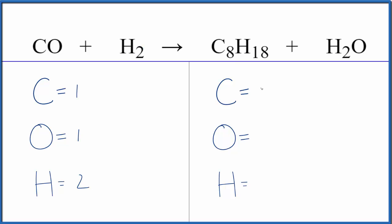On the product side, I have eight carbons, one oxygen here, and 18 hydrogens. And if you forgot these two hydrogens here, that's probably why you're having problems with this particular equation. So we have a total of 20 hydrogens on the product side.